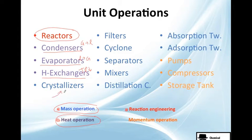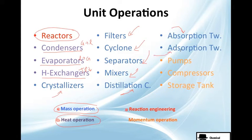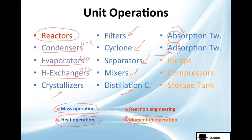Now for the mass operations, which is the largest section: we have a crystallizer, filter, cyclone, separators, mixers, a distillation column, and absorption — which is not the same as adsorption, so be careful, they are totally different. Finally, momentum unit operations include pumps, compressors, and storage tanks.